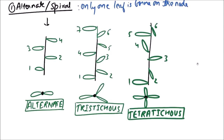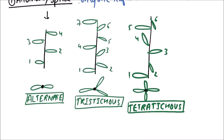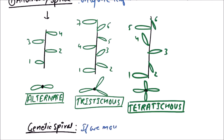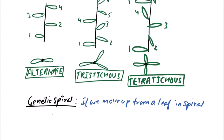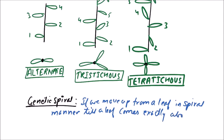These are a few types of alternate or spiral phyllotaxy. There is a term called genetic spiral. If we move up from a leaf in a spiral manner until a leaf comes exactly above the first one, this spiral is called a genetic spiral — one spiral is completed.